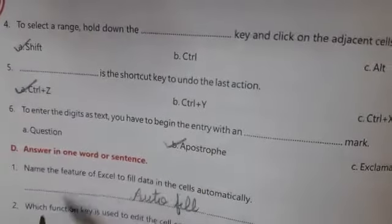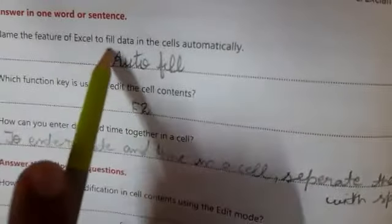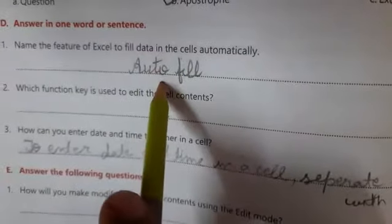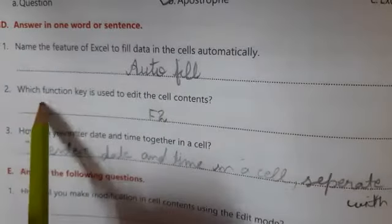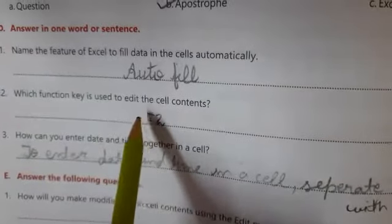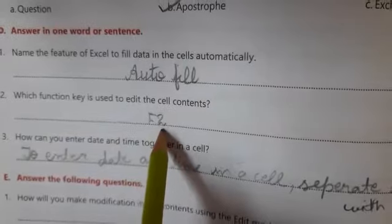Now next, Exercise D. Answer in one word. Name the feature of Excel to fill data in the cells automatically. This is AutoFill option. Number two: Which function key is used to edit the cell contents? It is F2 key.